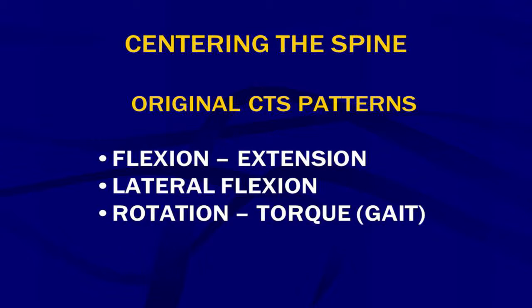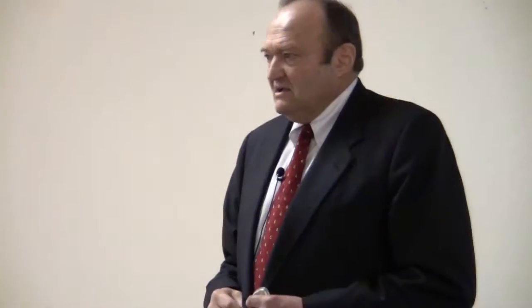We have these concepts of centering the spine. The original center of the spine patterns were flexion, extension, lateral flexion, and rotation or gait. Any vertebra can move in those three planes — flexion, extension, lateral flexion, and rotation, which is related to gait. Note that vertebrae can sometimes move in translation, but we leave that out of this discussion.